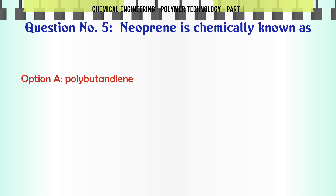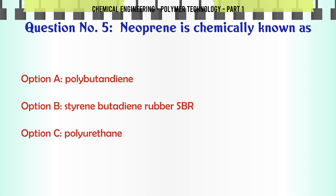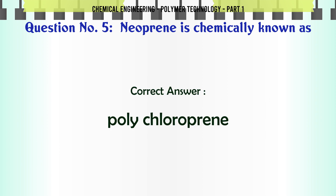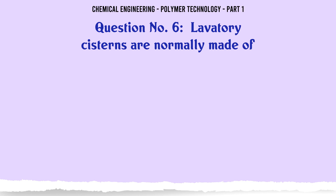Neoprene is chemically known as: A. Polybutadiene, B. Styrene, C. Styrene butadiene rubber (SBR), D. Polychloroprene. The correct answer is Polychloroprene.